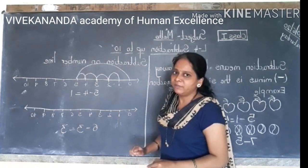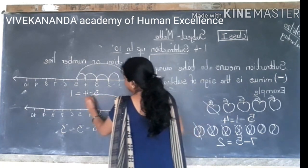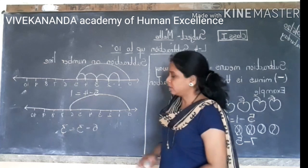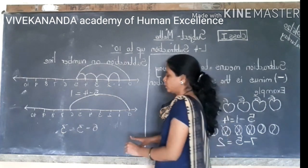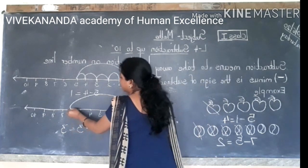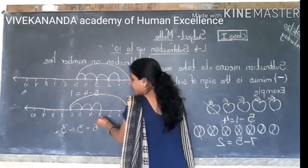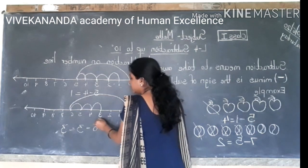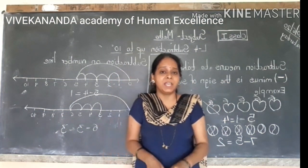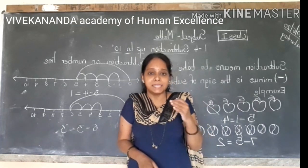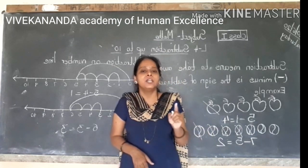One more example: this is number six — the kangaroo jumps to number six. Now minus — minus बोला तो हमें पीछे की तरफ आना है, to the left side. So six minus three — one, two, three. तो हम कहाँ आके रुके? Three. So it is your answer. In the same way you have to solve the examples.